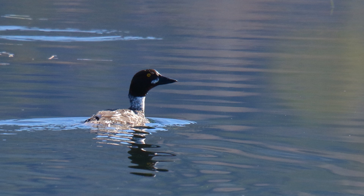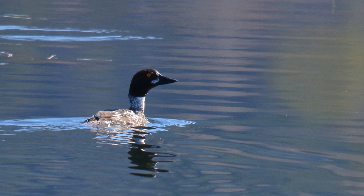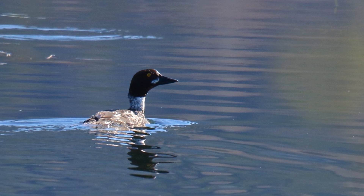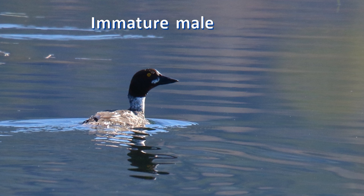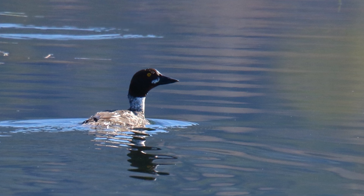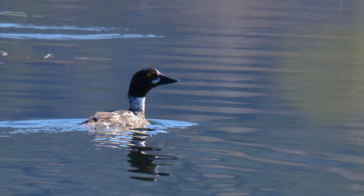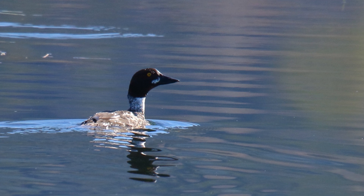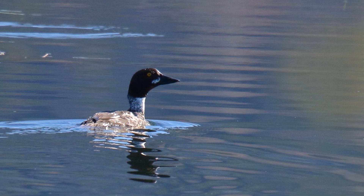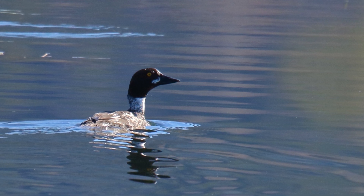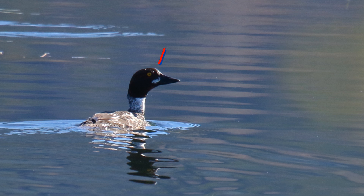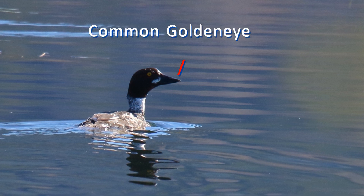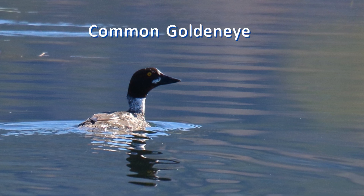Not all birds are going to be so sharply marked. Here is an immature male in April, about a year old. In the fall, it will molt into its adult plumage. Do you recognize the triangular head shape and big bill as belonging to common goldeneye?